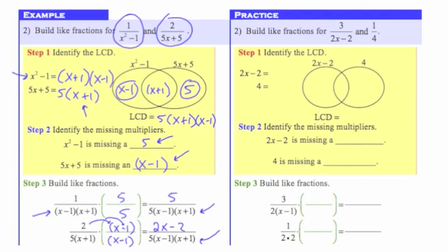Practice problem 2. Here are my denominators. I need to first factor these. I'm going to factor 2x minus 2 — the greatest common factor is 2, so that will be 2 times (x minus 1). And then with 4, that is just 2 times 2. I've got it factored. Now I need to put these factors into the Venn diagram. Notice they have a common factor of 2, which is going in the overlap.